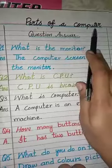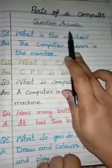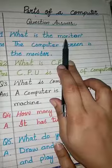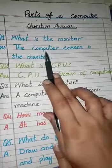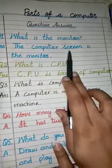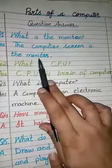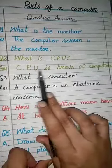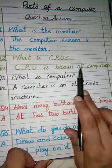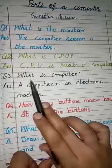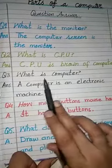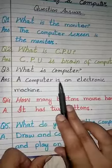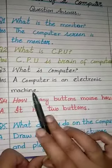Question number one: What is the monitor? The computer screen is the monitor. Question number two: What is CPU? CPU is the brain of the computer. Question number three: What is a computer? A computer is an electronic machine.